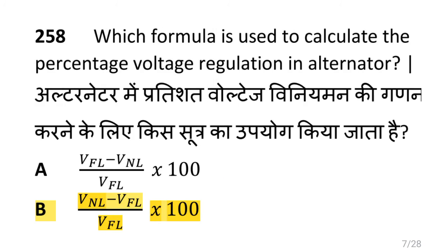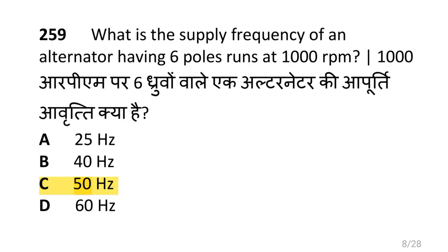Which formula is used to calculate the percentage voltage regulation in an alternator, i.e. (V no load minus V full load) upon V full load multiplied by 100? What is the supply frequency of an alternator having 6 poles at 1000 RPM, i.e. 50Hz?